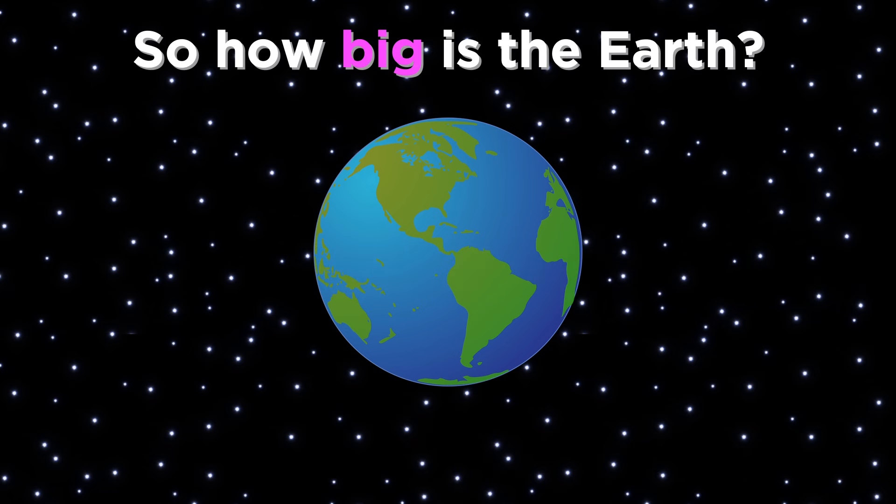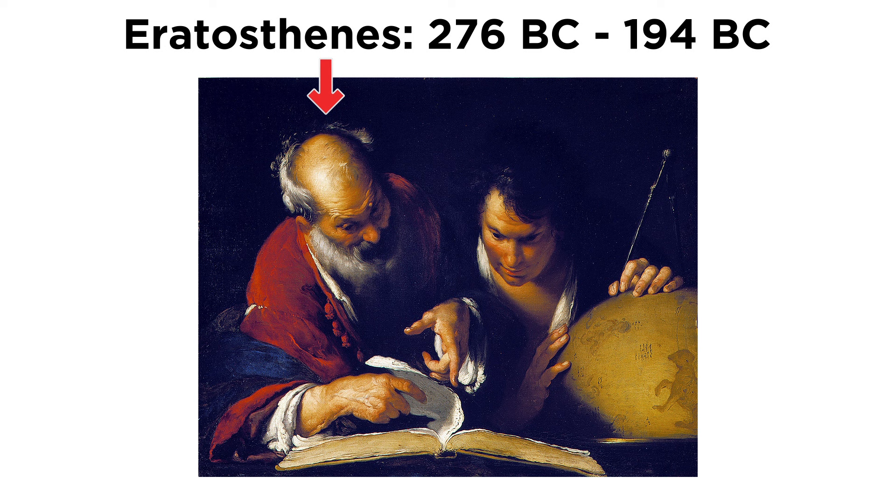Once it was determined that the earth is spherical, the next logical step was to attempt to measure the dimensions of the sphere. Eratosthenes was the first to do this, and with impressive accuracy.